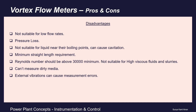Second, vortex flow meters cause pressure loss. Like orifice meters, being intrusive they cause a pressure drop as flow increases, resulting in permanent loss. Liquids near their boiling point could experience cavitation if the pressure drops below the vapor pressure. When pressure recovers above vapor pressure, bubbles implode — cavitation causes the meter to malfunction and should be avoided at all times. A higher minimum straight pipe length is also required upstream and downstream.